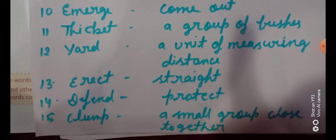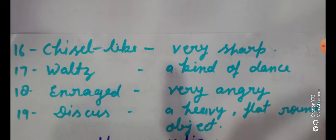Emerge: come out. Thicket: a group of bushes — jhaanniyon ka ek samooh. Yard: a unit of measuring distance — distance ko measure karne ki ek aur unit. Erect: straight. Defend: protect. Clump: a small group, close together. Chisel-like: very sharp — it is a tool.